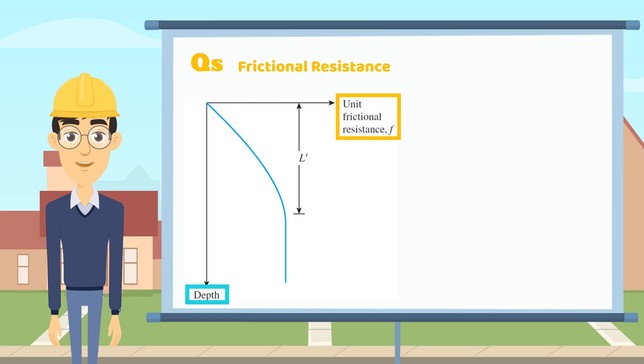According to the figure, the unit frictional resistance will keep increasing proportionally with the depth of the pile until it reaches the maximum at L', which is the critical depth. The depth of it is around 15 times the diameter of the pile.